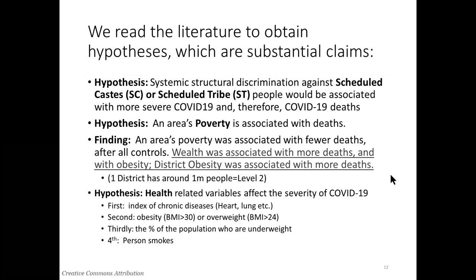The detailed data didn't include the social group of those who had died in each district — it was just a count of how many had died. So we had trouble testing the hypothesis about systemic structural discrimination against some social groups. The hypothesis would be that the SCs or STs would have higher risks of deaths, partly because of long-term historical discrimination — illegal since about 1947 or 1950 in India's constitution — but because of historic poverty and lack of assets in those groups relative to others, we do find they have a higher level of COVID deaths, measured after controlling for age, urban, and other factors like wealth.